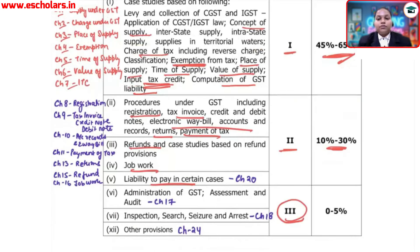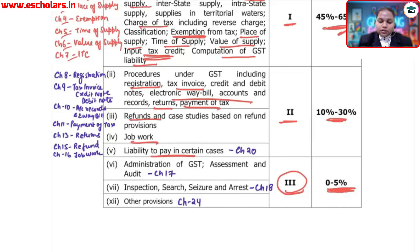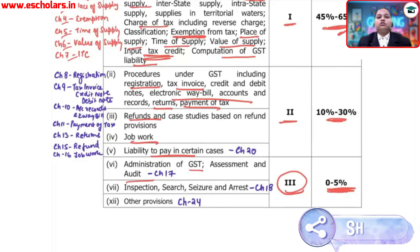Section number 3 carries 0% to 5% weightage — this is Category C. It includes Inspection, Search, Seizure and Arrest, Assessment of GST, and Audit, which are theoretical topics. If you need to study this section, focus on repeated questions, as the chances of questions from this section are low.